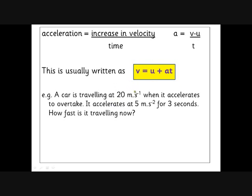Here's a little example. A car's travelling 20 metres per second, then it accelerates to overtake. It accelerates at 5 metres per second squared for 3 seconds. How fast is it travelling now? Well, there's U, there's AT, it's 35. Hopefully if you understood acceleration you didn't really need an equation for that because it's increasing by 5 every second for 3 seconds so it's gone up by 15.